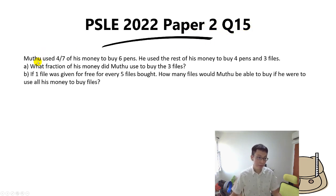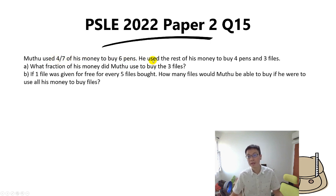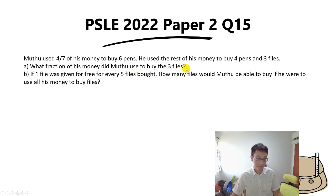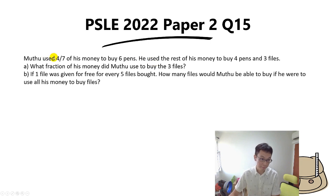In this question, Mutu used 4/7 of his money to buy six pens. He used the rest of his money to buy four pens and three files. For Part A, the question asks what fraction of his money did Mr. Mutu use to buy the three files.